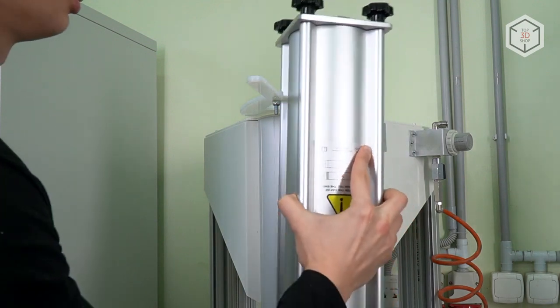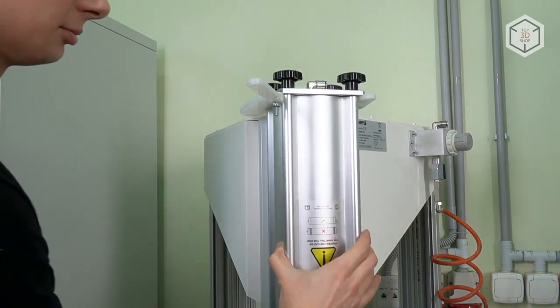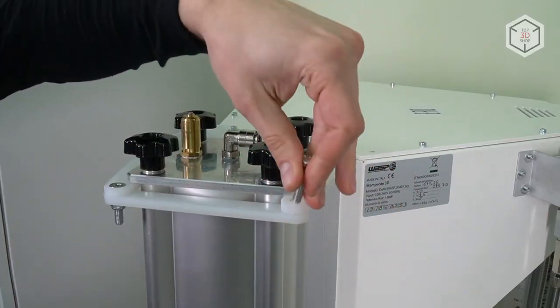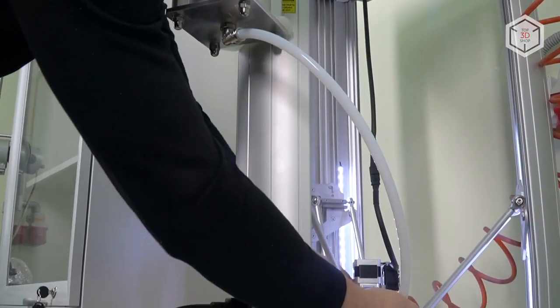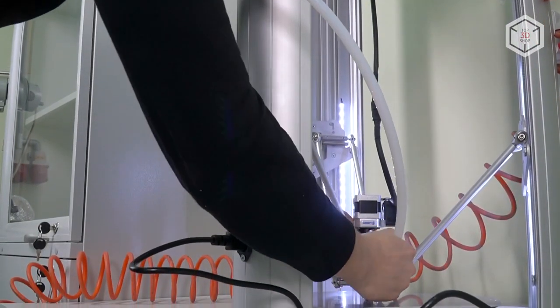The container itself is mounted to the back of the printer. The extruder mechanism, the pressure control, and the container are connected via Teflon tubes. The mixture is fed under pressure.